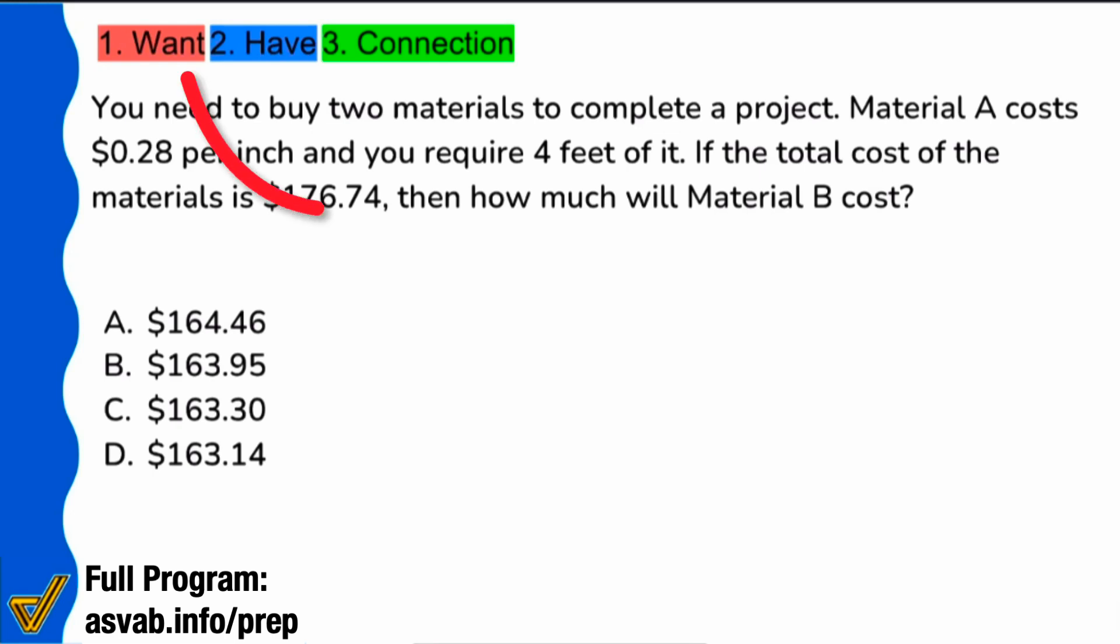But when you're back, after you read the question and see how much will material B cost, we immediately know we're talking about material B. There's a cost associated with it, so you really got to think about the details. Is it costing per pound, per length, per whatever?